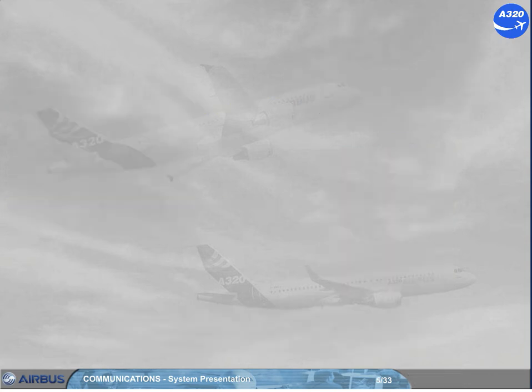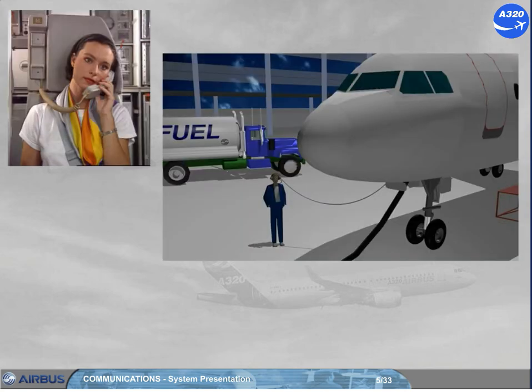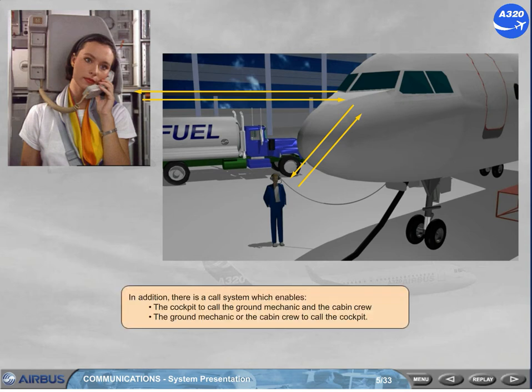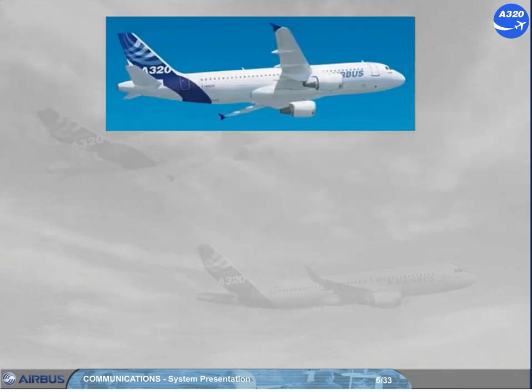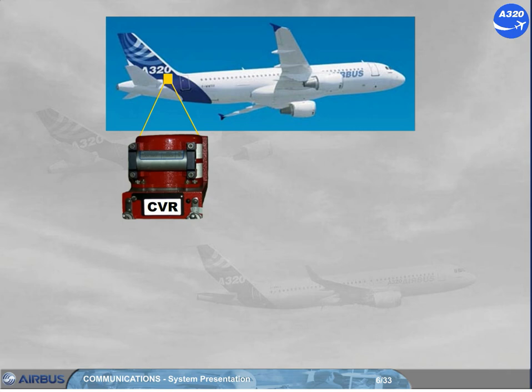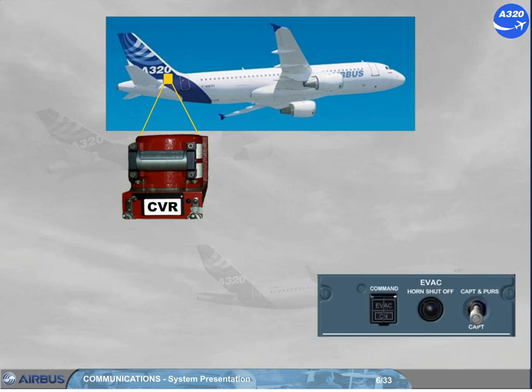In addition, there is a call system which enables the cockpit to call the ground mechanic and the cabin crew, and the ground mechanic or the cabin crew to call the cockpit. The cockpit voice recorder, CVR, is also included in the communication system. Note: the evacuation command system, which is also part of the communication system, will be discussed in the cabin presentation.